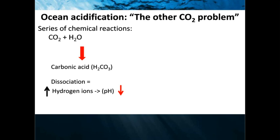The reaction also produces a hydrogen ion. pH is a measure of the concentration of hydrogen ions, and since the start of the industrial period the pH has gone down 0.1 units. That may not seem like much, but because it's a logarithmic scale, 0.1 units actually translates into a 30% increase in hydrogen ions — and the amount of hydrogen ions affects the physiology of animals.